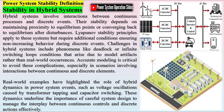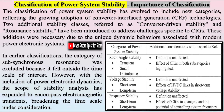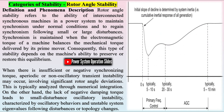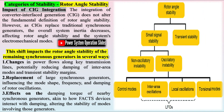CIG technologies: the growing presence of converter interface generation in the energy mix has introduced new challenges in power system stability. These arise due to the distinct dynamic behavior of CIGs compared to traditional synchronous generators. Key factors include the interaction of CIG controls, reduced overall system inertia, and limited ability of CIGs to contribute to short-circuit currents during faults. The performance of CIGs is largely governed by their control systems and strategies employed to manage the power electronic converters that link energy sources to the power grid.